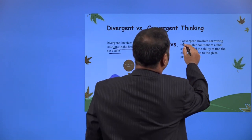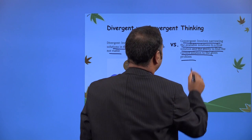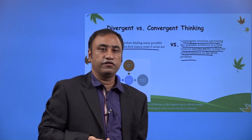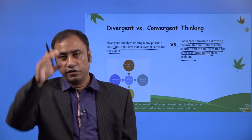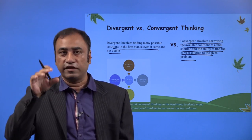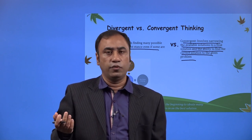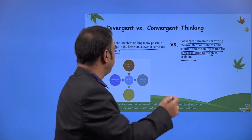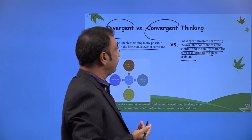When you make them as a choice, convergent involves narrowing the available solutions to a final solution and the ability to find the correct solution to the given problem. Divergent and convergent work hand in hand. Divergent gives you multiple options and solutions. Convergent streamlines the entire process — it selects some solutions, or maybe only one solution. As in the case of the iPhone, three different problems were combined into one solution.